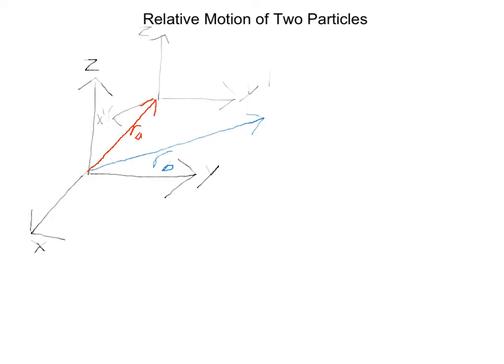And now the perspective of the prime coordinate system of this point b, that is r sub b with respect to a. So essentially, it'd be like there's a particle going from there to there from a person who's just standing here, he is the fixed observer.